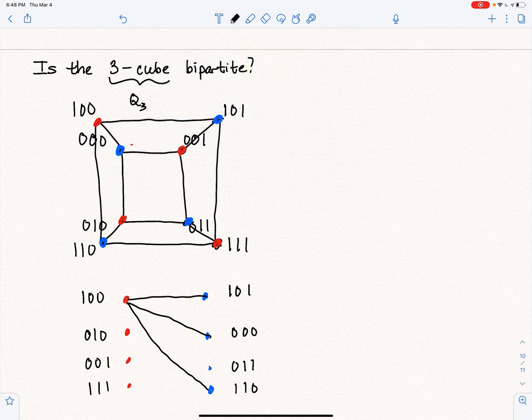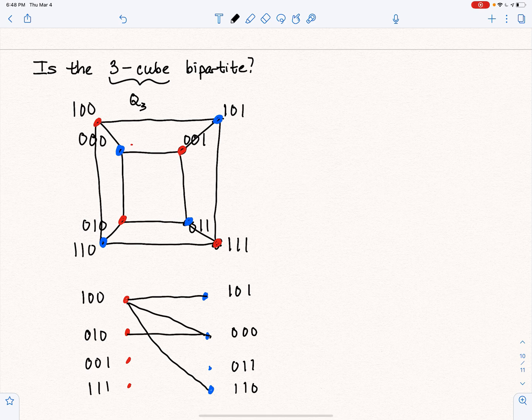Okay. Now let's see what happens with 0, 1, 0. It is not adjacent to 1, 0, 1. It is adjacent to 0, 0, 0, and 0, 1, 1, and 1, 1, 0.